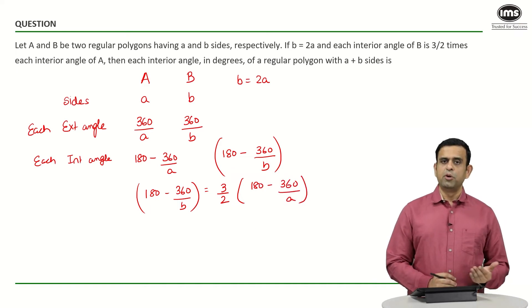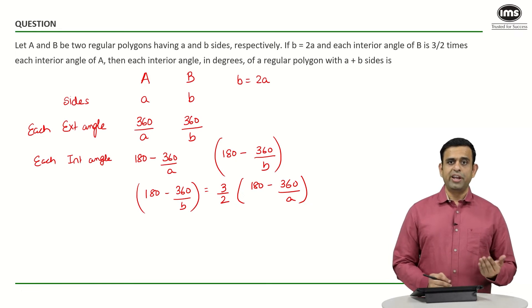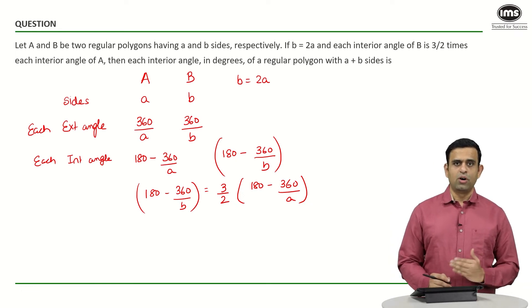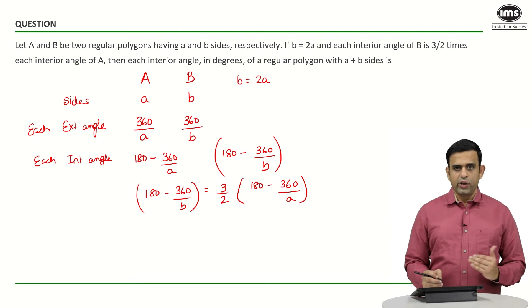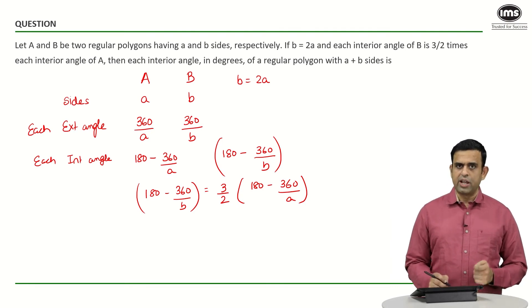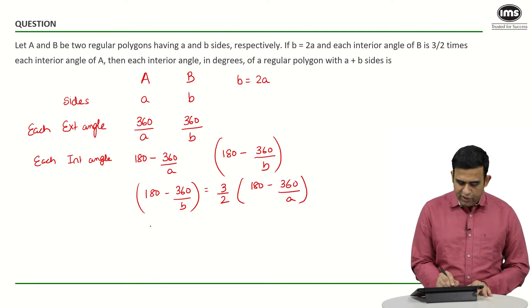We can put B in terms of A and take 180 common throughout on both sides. If I take 180 common and replace B as 2A, I will get 1 minus 2 divided by 2A, which equals 3/2 into 1 minus 2 divided by A. This gives 1 minus 1 by A equals 3/2 minus 3 by A.